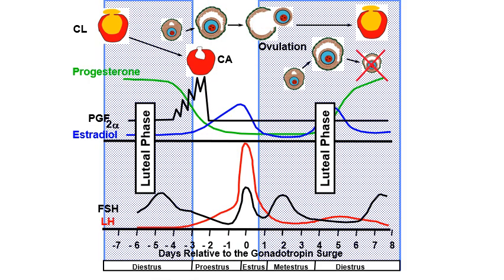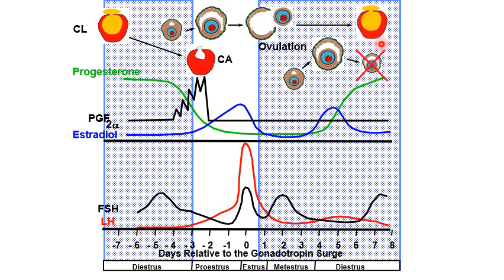The luteal phase encompasses metestrus and diestrus, at least for cows. It corresponds to the time when the corpus luteum forms and becomes dominant. After ovulation, the regressed follicle becomes the corpus haemorrhagicum, then the corpus luteum (yellow body). The CL is the main source of progesterone, which is important for pregnancy. During the luteal phase when the CL is dominant, there is a peak in progesterone levels.